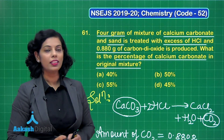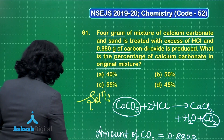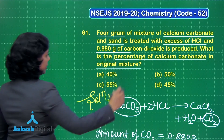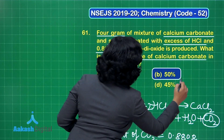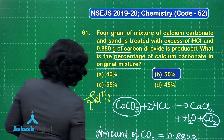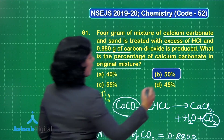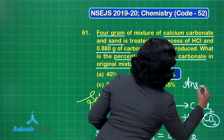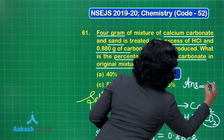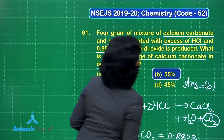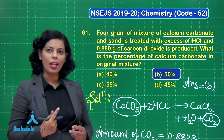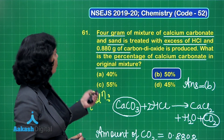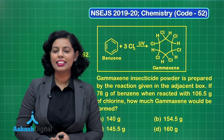Have a look at the options — in option B you will see that the correct answer is given. So the correct answer is option B. I hope it is clear. Now the turn is for the next question, question number 62.